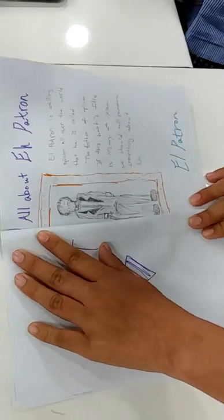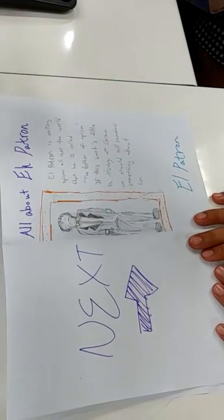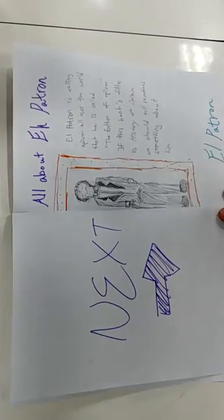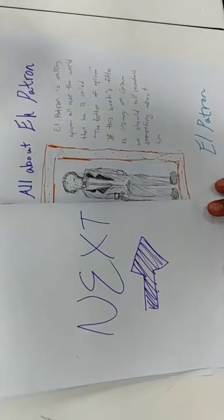All about Albatron. Albatron is selling Opium all over the world, that he is called the father of Opium. If this book's title is History of Opium, we should tell readers something about it.